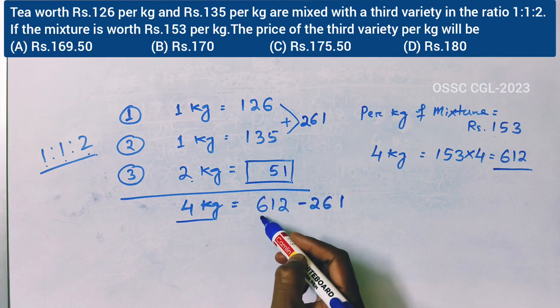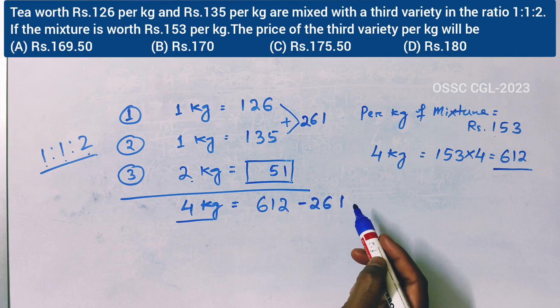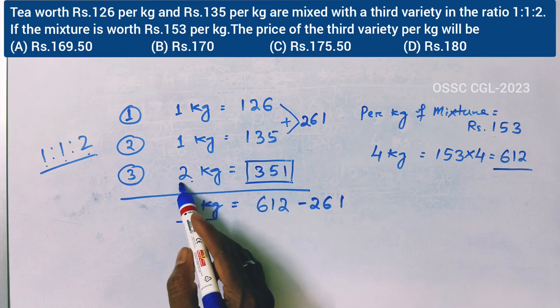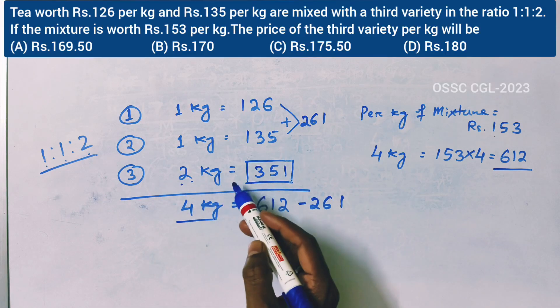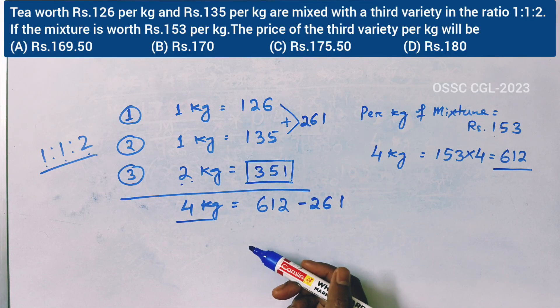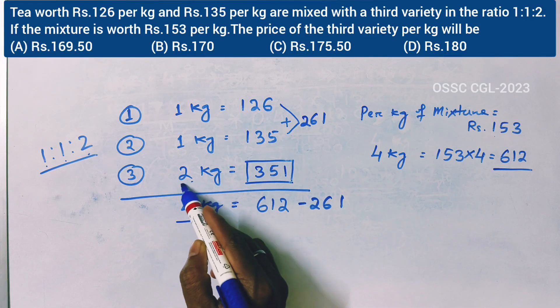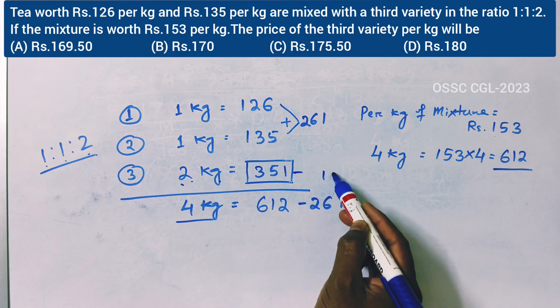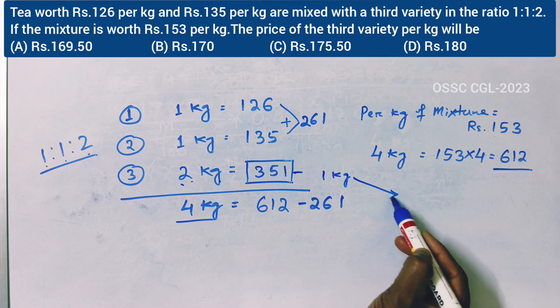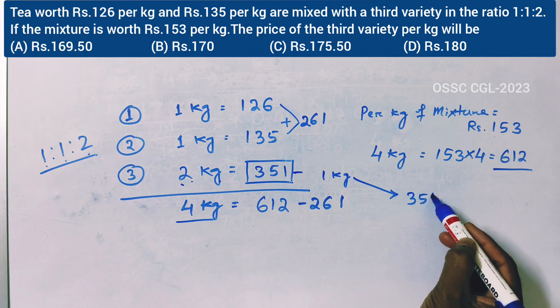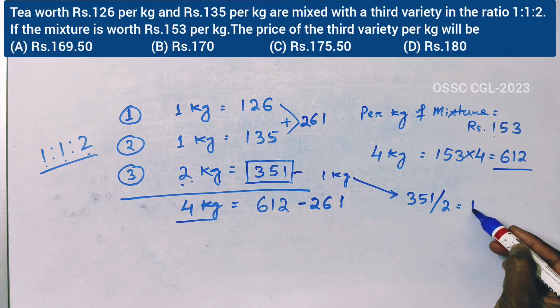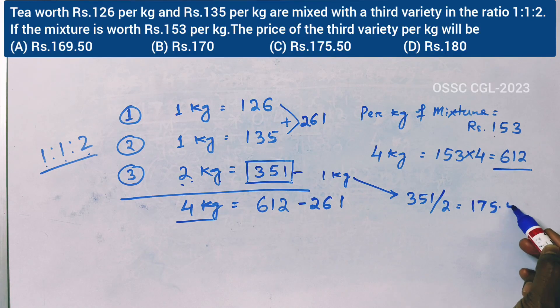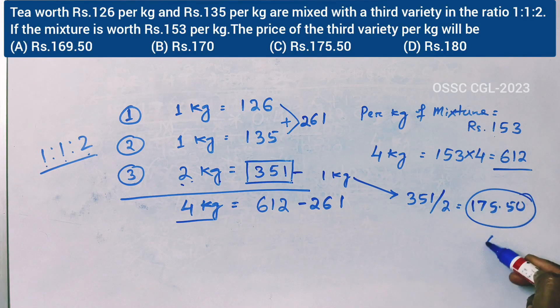Subtracting the first two varieties gives 351. Third variety 2 kg has value Rs. 351, so the price of third variety per kg is 351 ÷ 2 = Rs. 175.50. This is the answer. Thank you.